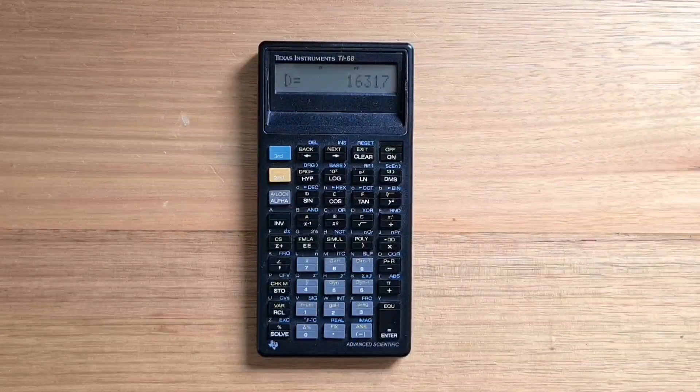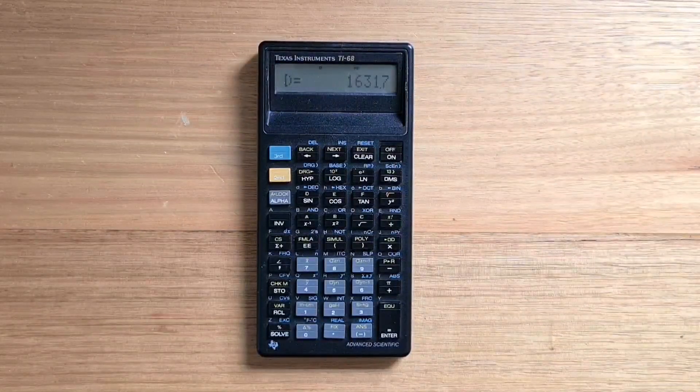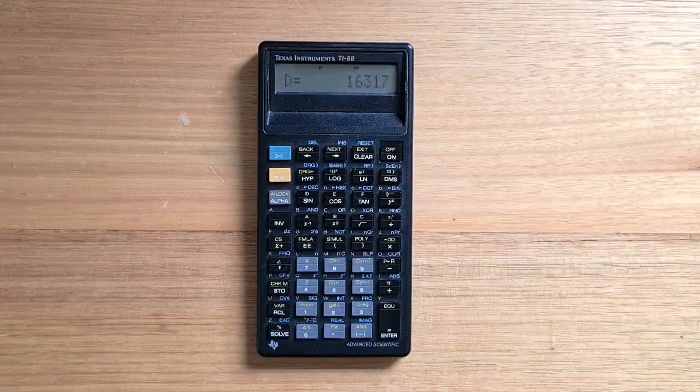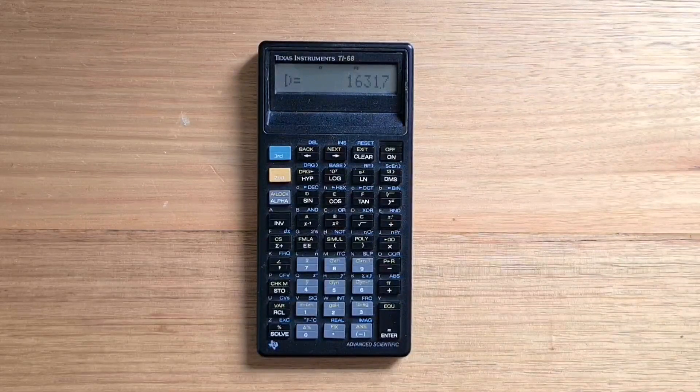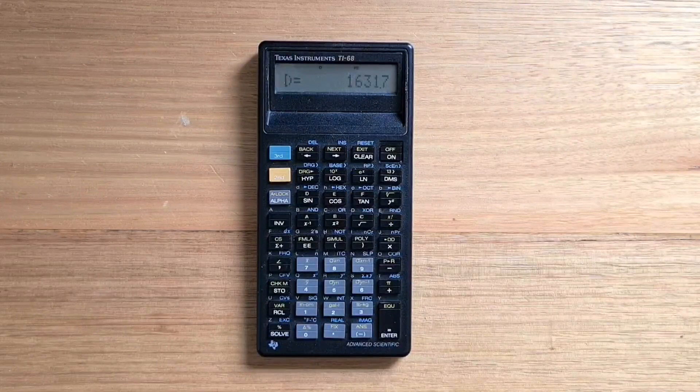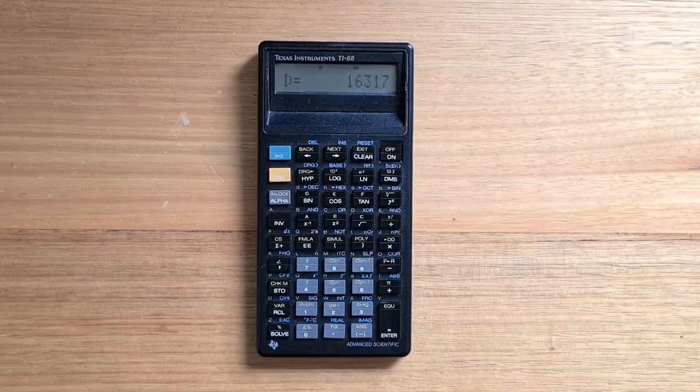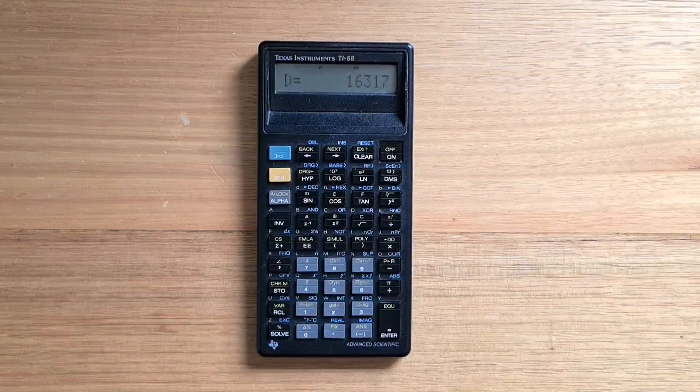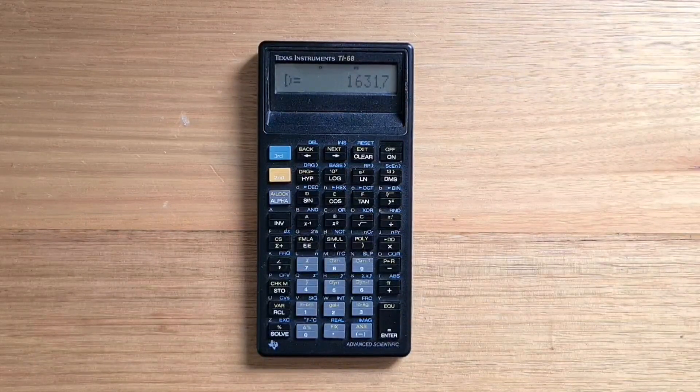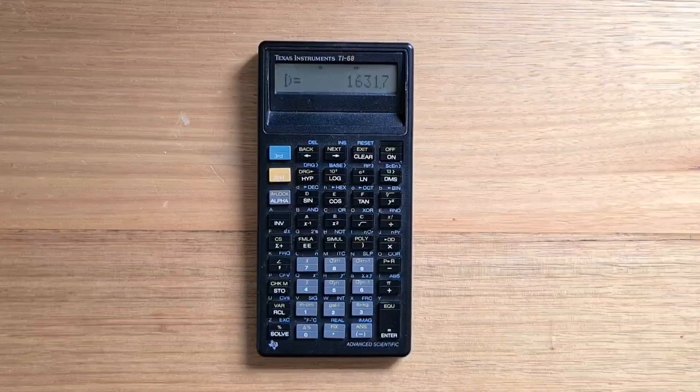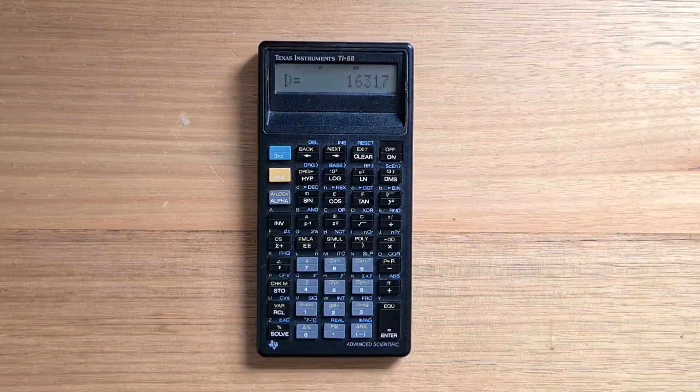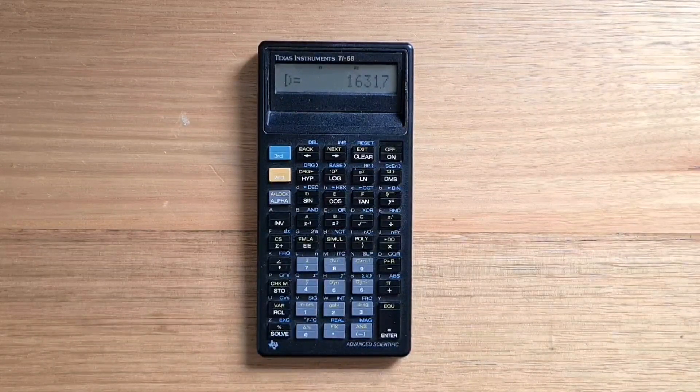But given there was the HP 42S and Casio 4500P on the market at the same time, it may have been a stretch to describe the TI-68 as a truly advanced scientific calculator. It's probably more appropriate to compare the 68 with the Casio FX 5000F that was released in 1987, or the HP 27S from the Pioneer series. But both of those actually had more advanced formula functionality, such as loops and conditionals.